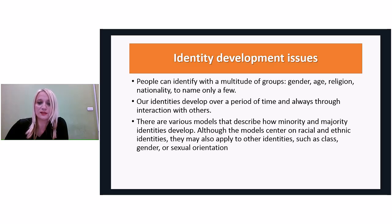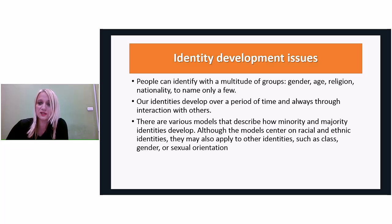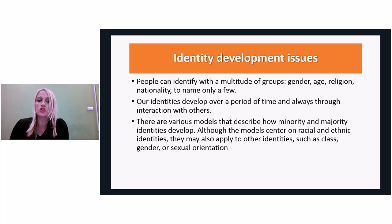Stage three is resistance. This stage represents a shift — a move from blaming minority members for their condition to naming and blaming their own dominant group as a source of problems. This resistance may take the form of passive resistance with little behavioral change, or active resistance trying to reduce, eliminate, or challenge the institutional hierarchy that oppresses.